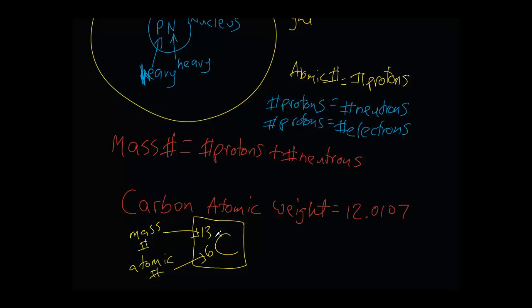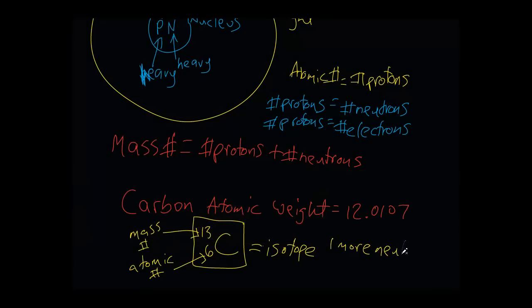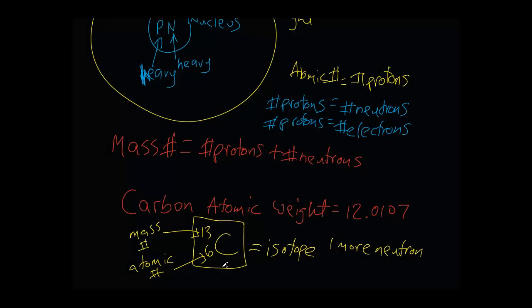If you see something written like this, you know that if there's a 13 near the C, this is a carbon isotope, meaning that it has one more neutron than it's supposed to have. Because it says here that the number of protons is 6, and if its mass number is 13, that means it has one extra neutron. 6 plus 7 is 13.